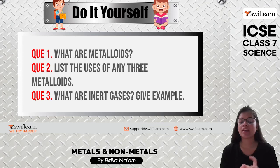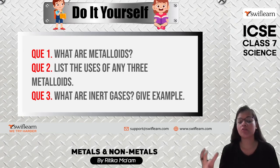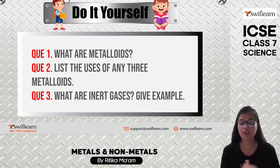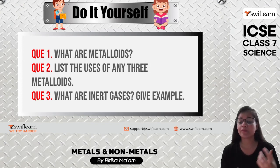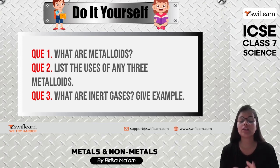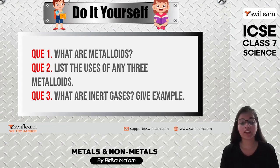To review: metalloids are substances whose properties lie between metals and non-metals — they have some properties of metals and some of non-metals. Metalloids have many uses especially in the semiconductor industry: making LCD screens, calculator screens, computers, greasing, lighting, and ceramic substances. An inert gas is a gas that doesn't react with any other metal, non-metal, or substance; it is also known as a noble gas. Examples include helium, xenon, radon, and krypton.